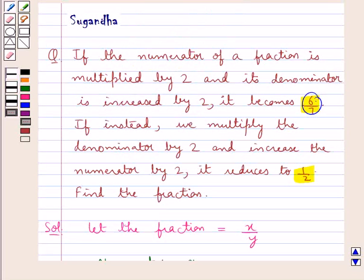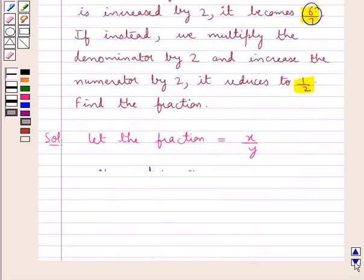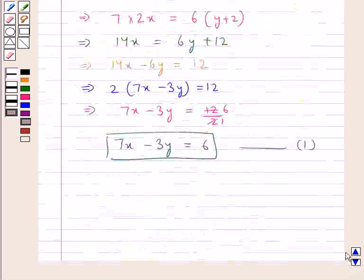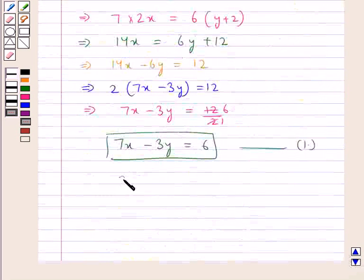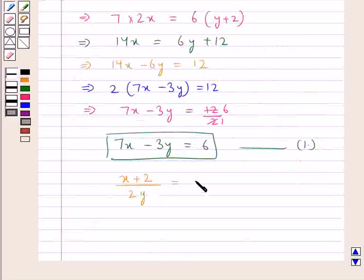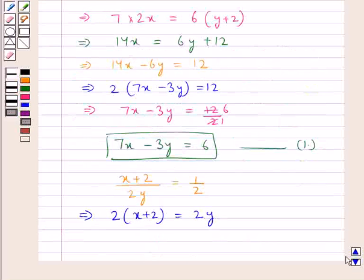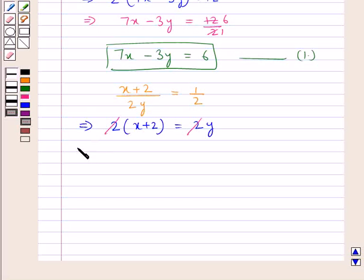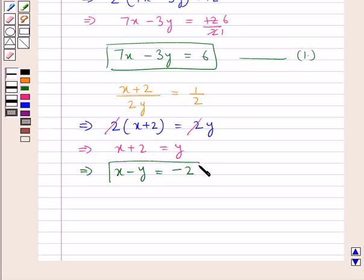Now we apply the second condition, in which we multiply the denominator by 2 and increase the numerator by 2. So we now have x plus 2 upon 2y, and the fraction becomes 1 upon 2. Cross multiplying, we get 2 multiplied by x plus 2 is equal to 2y. The 2's cancel, leaving x plus 2 is equal to y, or x minus y is equal to minus 2. This is our second equation.